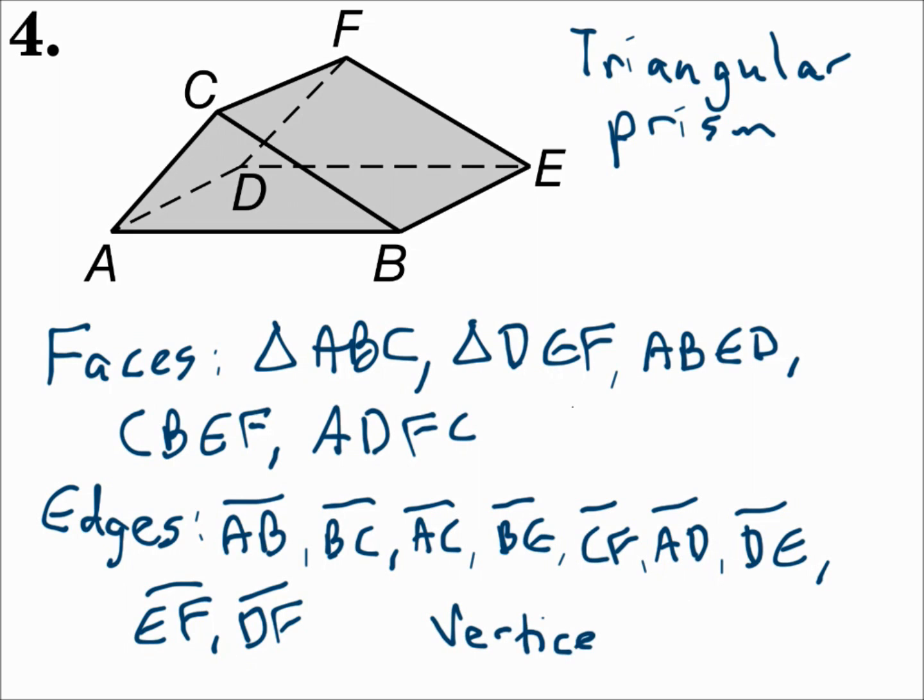The vertices are the six points. A, B, C, D, E, and F. Remember again to name everything properly. The triangles have a triangle symbol with the three vertices. The rectangles are just named with the vertices in order as you go around. The edges are segments with the endpoints and a segment bar on top. And the vertices are just the points.